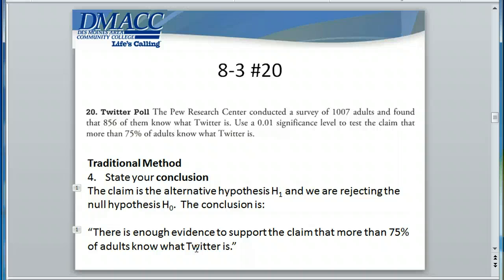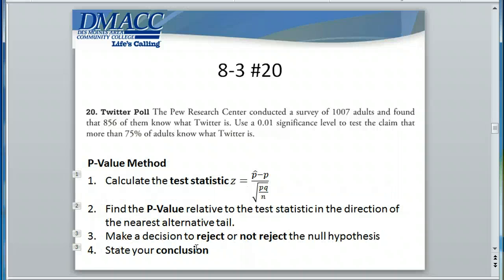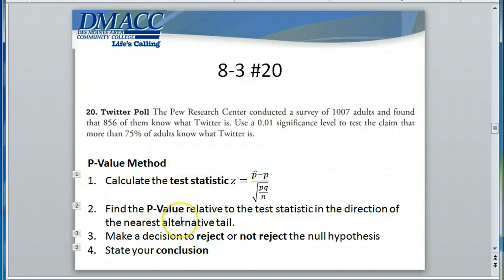Now let's look at the p-value method and see if we come to the same conclusion. For the p-value method, we again calculate the test statistic, then figure out the area relative to that test statistic in the direction of the nearest alternative tail. We're dealing with the right tail, so we calculate the area in that direction from the test statistic. Then we compare that p-value to the level of significance of 1% to make a decision to reject or not reject the null hypothesis.